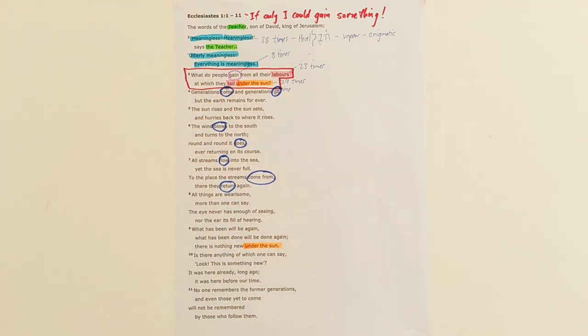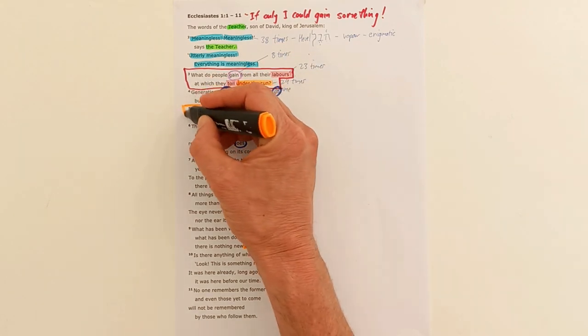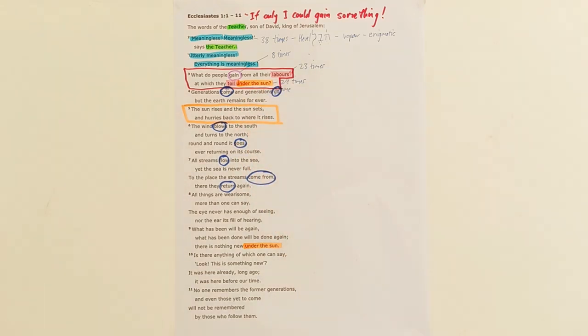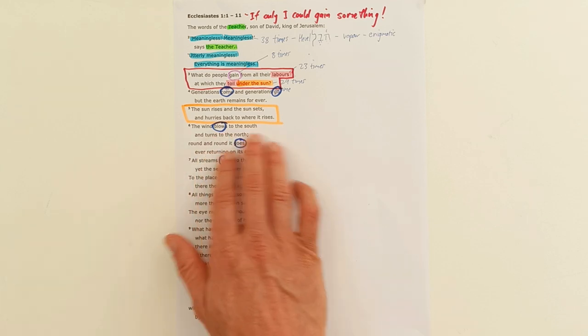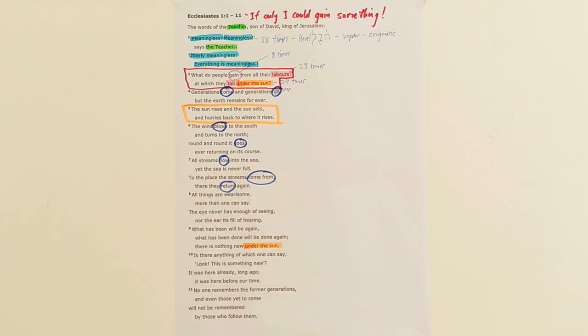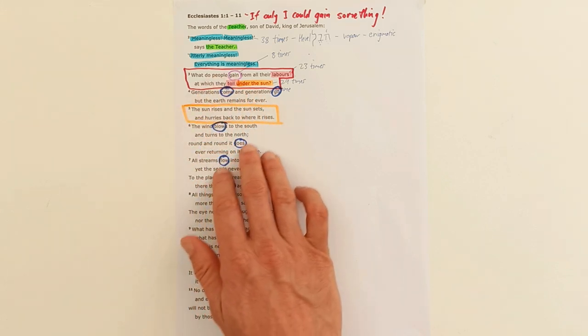There's a whole lot of this repetitive ebb and flow of life in this world. Verses 4 to 7 are very much a focus on the world as we know it. The sun rises and the sun sets, it hurries back to where it rises from. Generations come and go, the wind blows north and south, the streams flow into the sea, but the sea is never full.